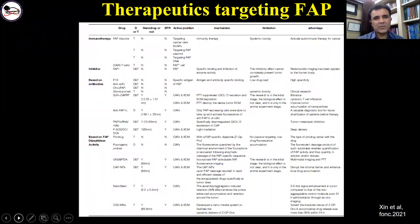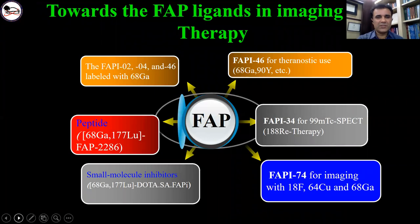There has been great interest in anti-CAF therapeutics, which prominently focus on FAP — for example, immunotherapy like vaccines, inhibitors, antibodies, and also FAP dipeptidase activity. With this background, let's turn to imaging. The evolution of FAP ligand radiolabeling into clinical translation started with derivatives FAPI-02 and -04. FAP targeting can be achieved by peptides like FAPI-2286 or small molecule inhibitors like DOTA-SA-FAPI. Other tracers include FAPI-46 for theranostic use, FAPI-34 for technetium and rhenium-188, and FAPI-74 for imaging with fluorine, copper, and gallium.